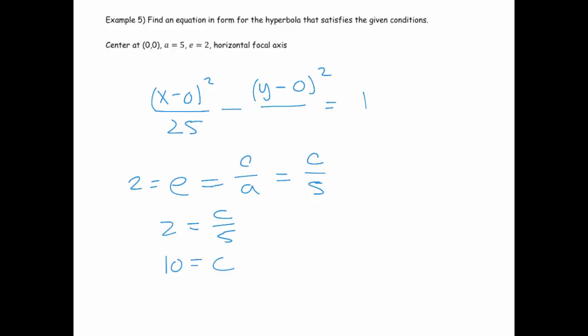And that means that I can use my Pythagorean identity to find b, because a squared plus b squared equals c squared, which means that 5 squared, which is 25, plus b squared, gives me 100. And that tells me that b squared is 75. So I'll put a 75 there. And now I've got an equation that satisfies all the conditions written above.